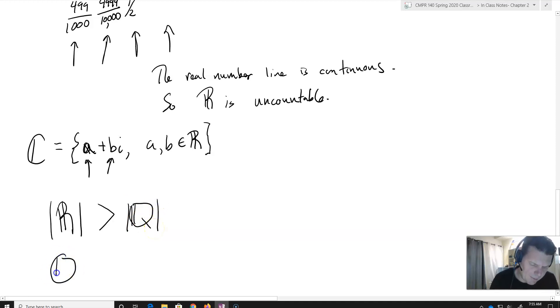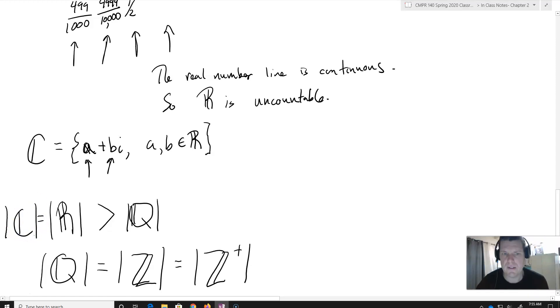But it turns out that the rationals have the same cardinality as the integers, and it's actually going to end up being the same cardinality as the integers plus. But R will have the same cardinality as C, because they're in one-to-one correspondence.